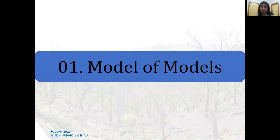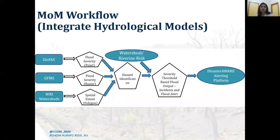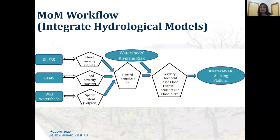I will briefly talk about the components of the Model of Models and its methodology. This flowchart shows the workflow to integrate two flood forecast models. The point value output from GLOFAS, raster output from GFMS, and global watershed boundaries developed by the World Resources Institute as polygons are integrated for hazard identification with a hazard score. This hazard score combined with watershed river-in-risk or coastal risk values produces the severity for each watershed, which is then used to create flood alerts for DisasterAWARE.